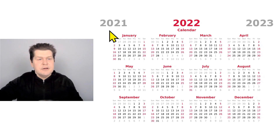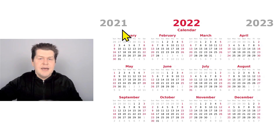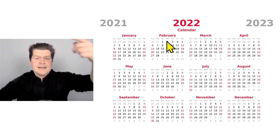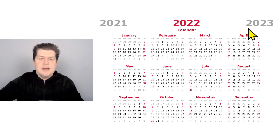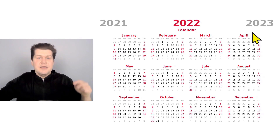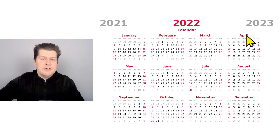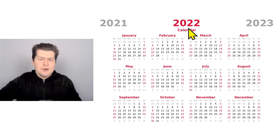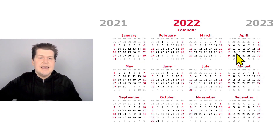So last year it was 2021, and next year it will be 2023. This year is 2022, so this is a calendar for this year.